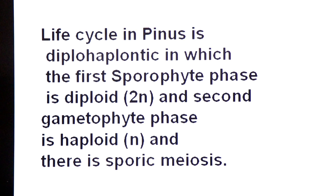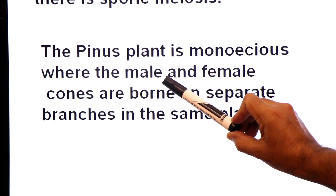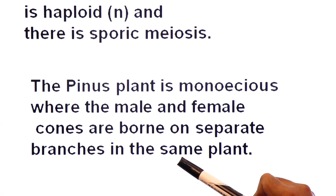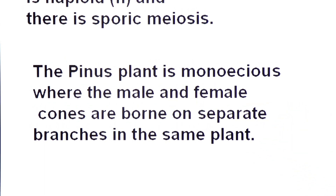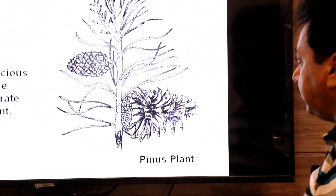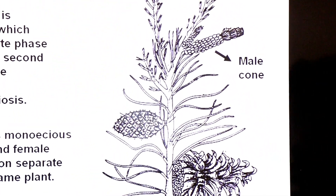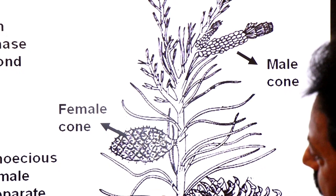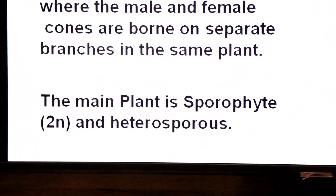Pinus is a monoecious plant, where the male and female cones are borne on separate branches of the same plant. Look at the diagram — here you see the male cone and here you see the female cone. When both male and female cones are present on the same plant, such a plant is called monoecious. The main plant is the sporophyte, which is diploid.